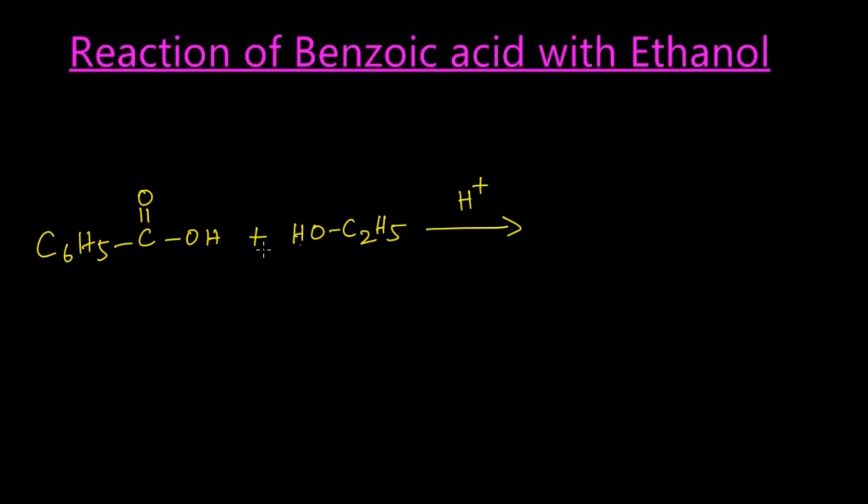Okay, what happens? The OH from the carboxylic acid and hydrogen from the alcohol will get eliminated as a water molecule—that is, dehydration takes place. The remaining two things will get united, so we get C6H5-C double bond O-O-C2H5.